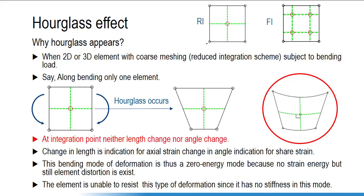Before talking more on hourglass, let me clarify one thing. We have two types of elements: linear and quadratic elements, otherwise called first order and second order elements. In the first order element, we have nodes only on the corners. In the second order element, we have nodes on the corners as well as on the mid-edges. The integration point of an element is the point where all calculations — for stress, strain, deformation, and so on — are done.